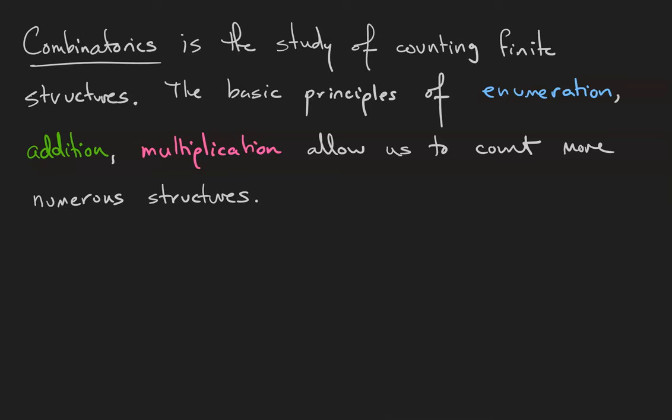Combinatorics is the study of counting finite structures. We're not talking about simple 1, 2, 3, 4. We're talking about counting structures for which there are a large amount, or maybe the amount is some expression involving other numbers whose values are left arbitrary. The basic principles in the combinatorics toolkit include enumeration, addition, and multiplication. Those will allow us to count more numerous structures.